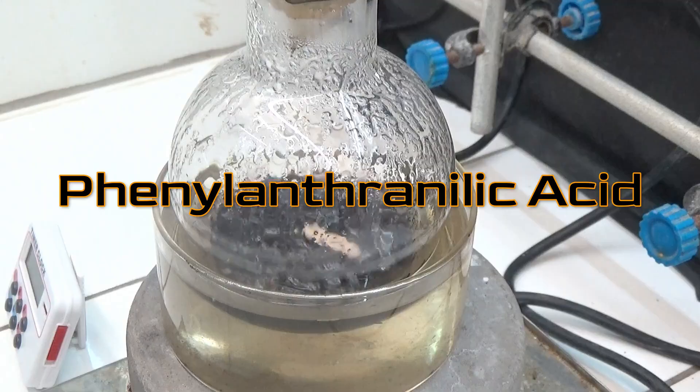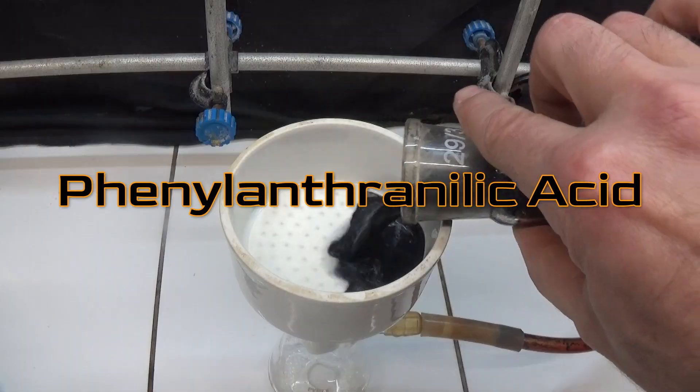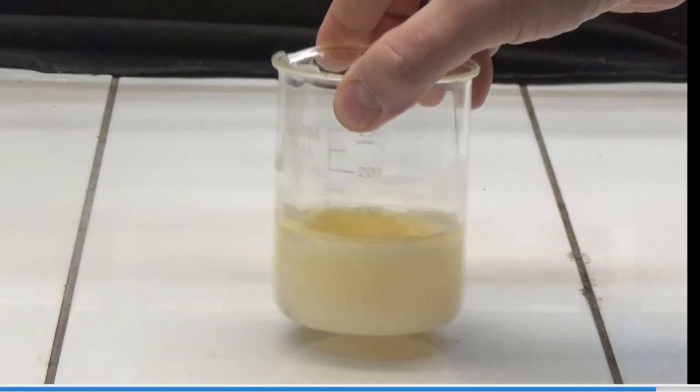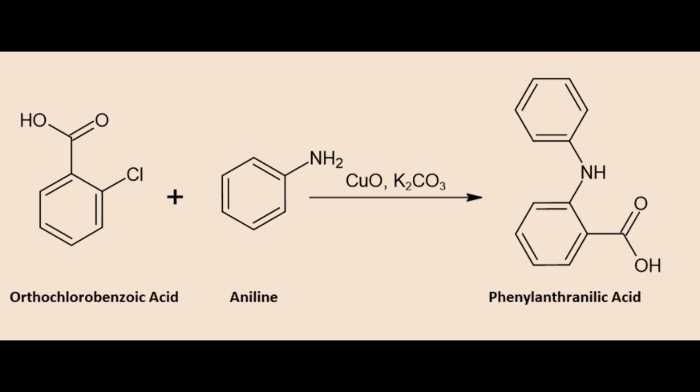This video shows how to synthesize phenylanthranilic acid. For this synthesis we will use orthochlorobenzoic acid synthesized in a previous video. Phenylanthranilic acid is formed by the action of aniline on orthochlorobenzoic acid using copper salts as a catalyst. This synthesis is known as the Ullman reaction.